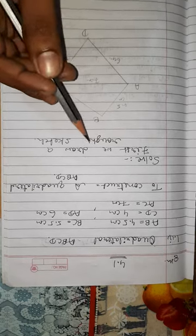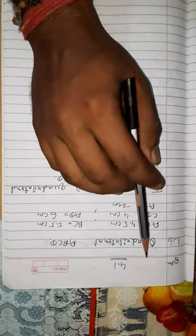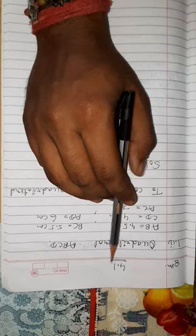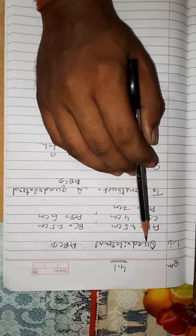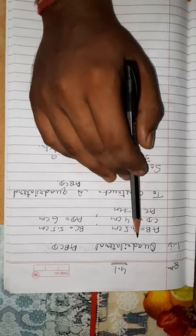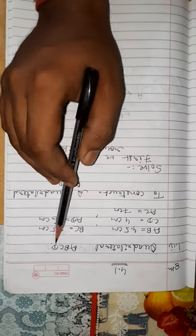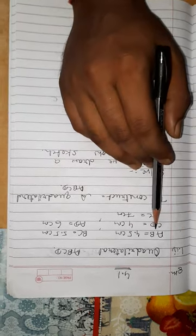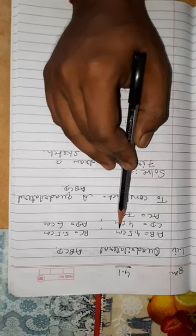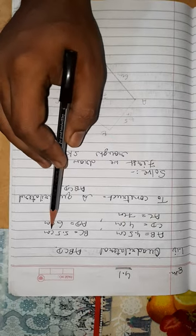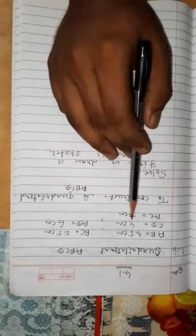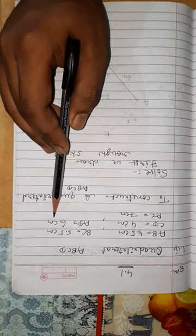Good morning dear friends. Now Exercise 4.1, read in your textbook, question number first. Given that quadrilateral ABCD where the sides given that AB is 4.5 cm, BC is 5.5 cm, CD is 4 cm, and AD is 6 cm.